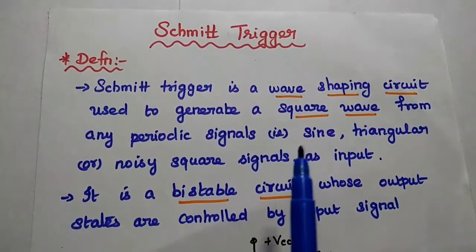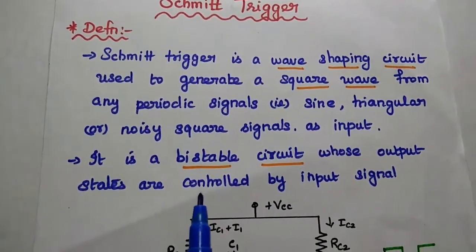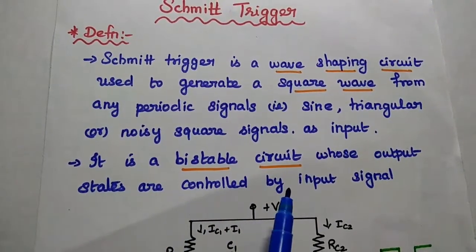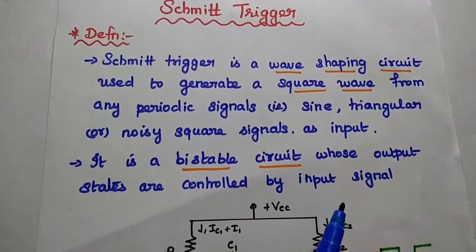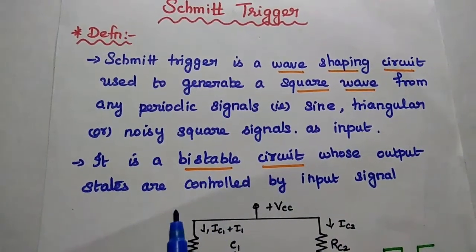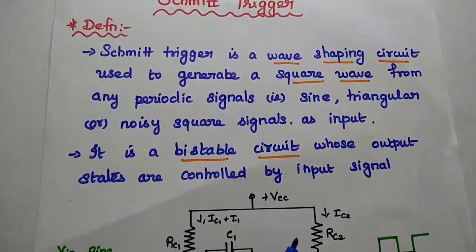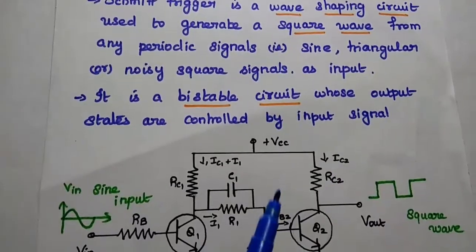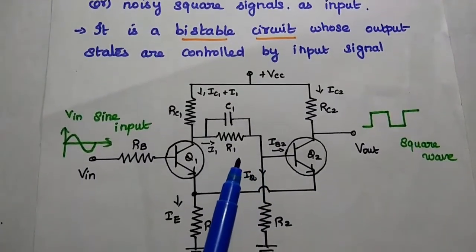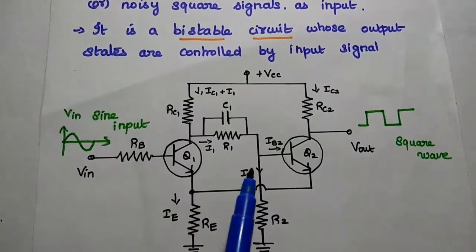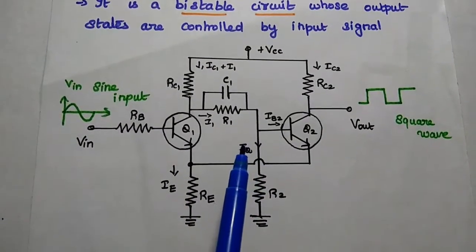It is mainly used to generate a square waveform from any periodic signals. It is a bistable circuit whose output states are controlled by the input signal — that means it has two stable states in its output. It is similar to a bistable multivibrator, but there is one major difference between the bistable multivibrator and the Schmitt Trigger that we can discuss in this circuit diagram.